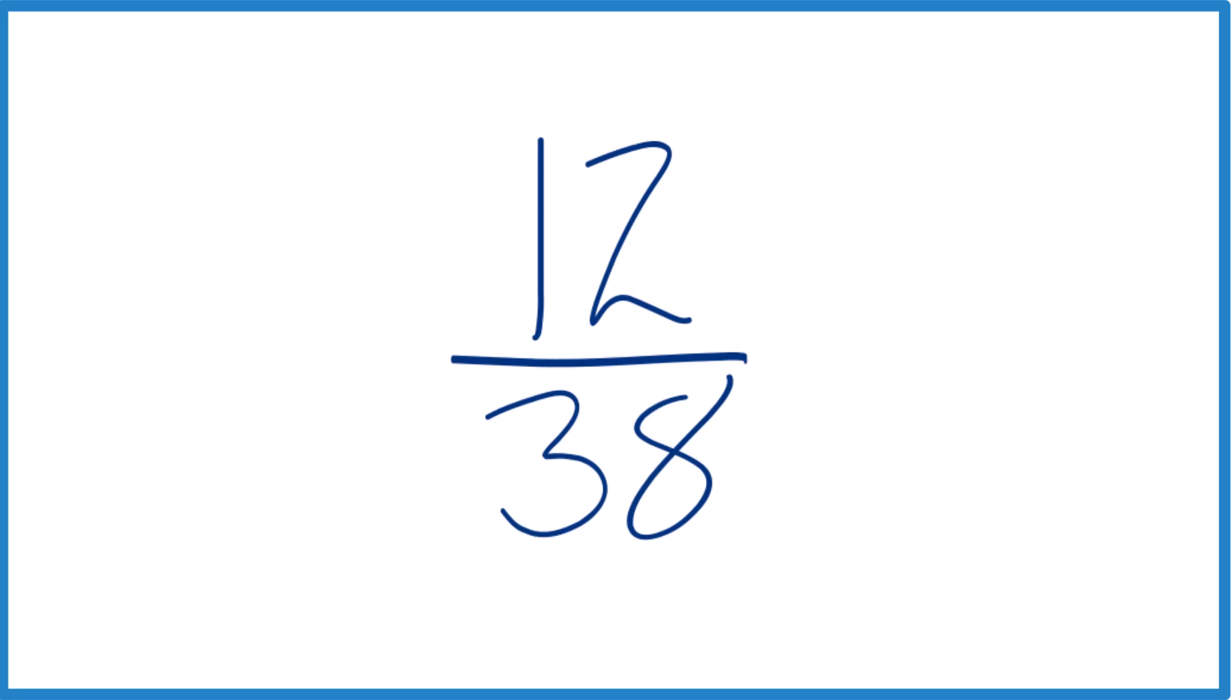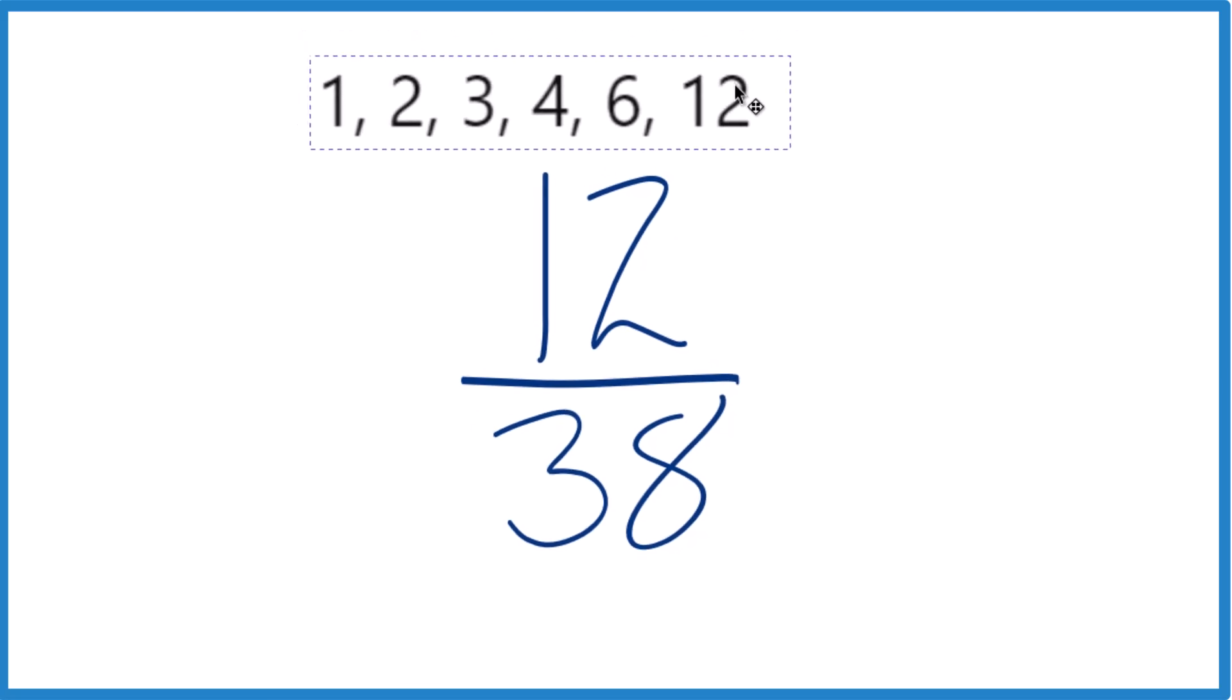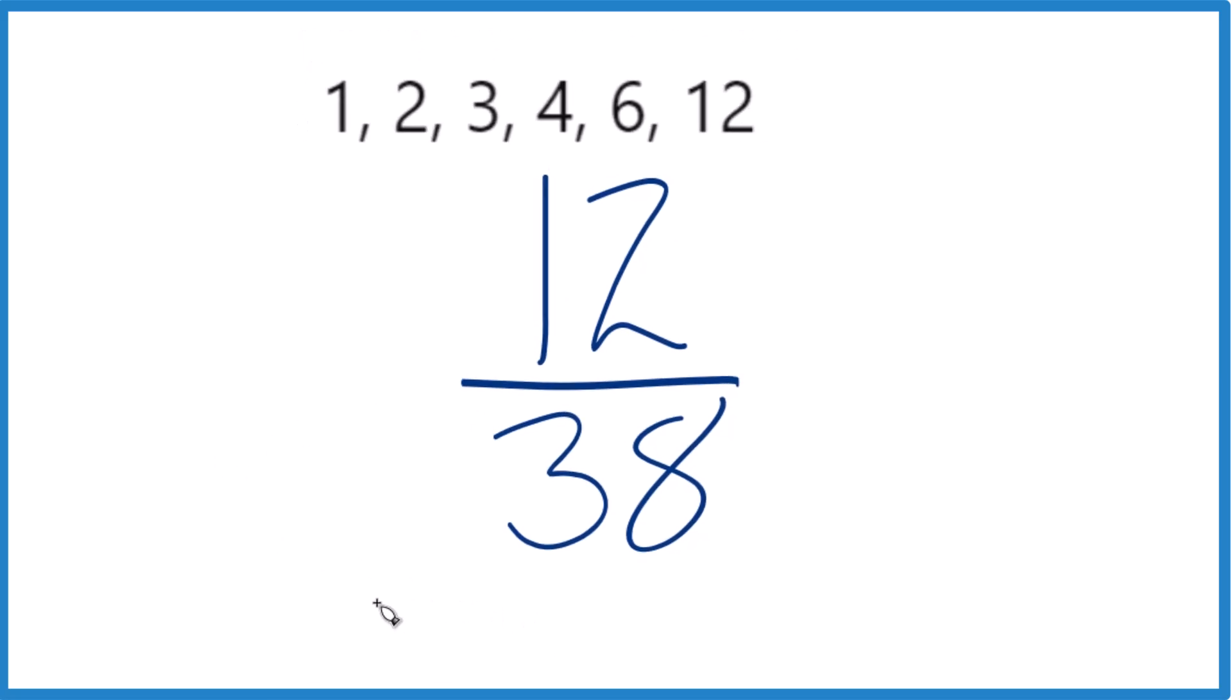So let's write the factors for 12 right here. And then for 38 we have, let's see, 1 times 38 and 2 times 19. I think that's it.